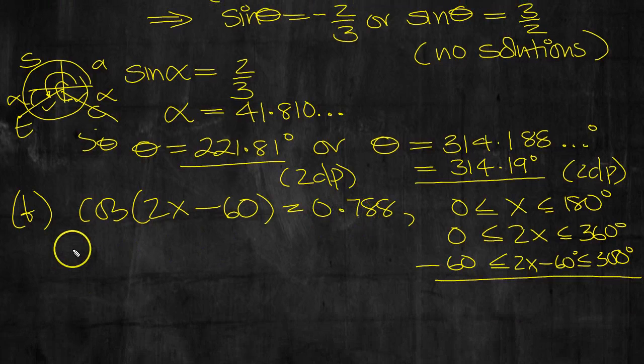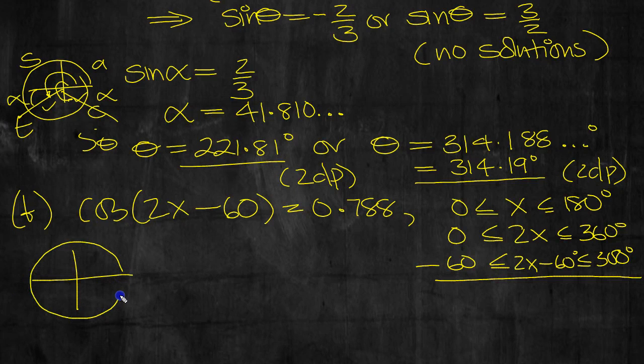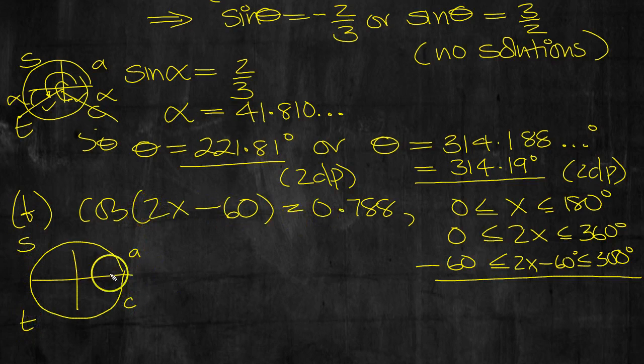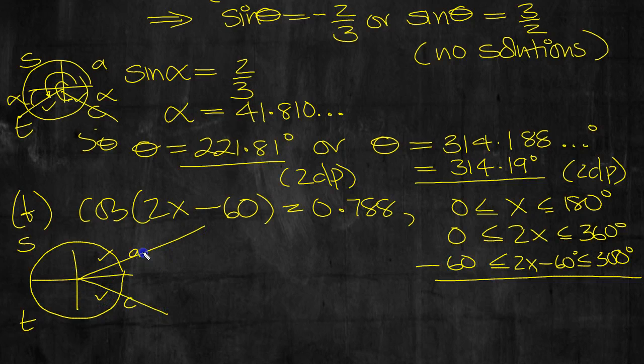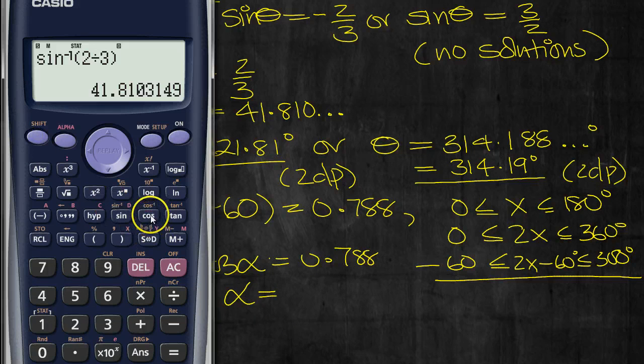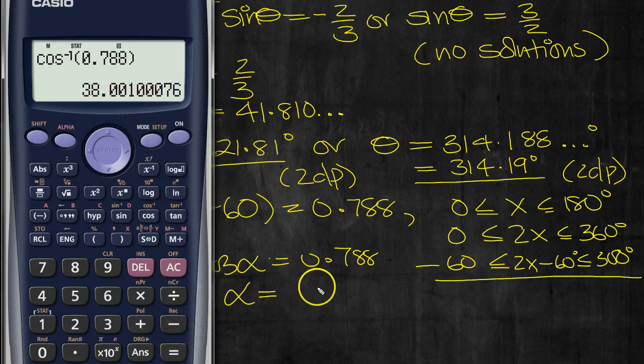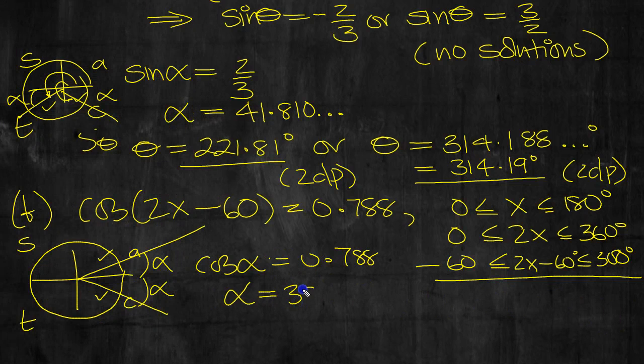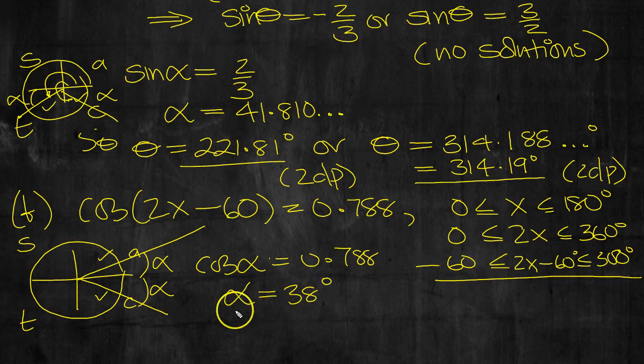So we've got cos of something equals 0.788. Let's have a look at that. Let's draw a circle. Write CAST. Cos in this particular problem is positive. Cos is positive here and here. So we'll mark off that. Mark off our associated acute angle. And simply write cosine alpha. Drop the negative if there is one to drop. So shift cos 0.788 then. We're in degrees mode. Keep it nice and accurate to start with. 38.0010. Well I think because it's so close to 38 degrees I'm just going to leave alpha as 38 degrees. So alpha is 38 then.